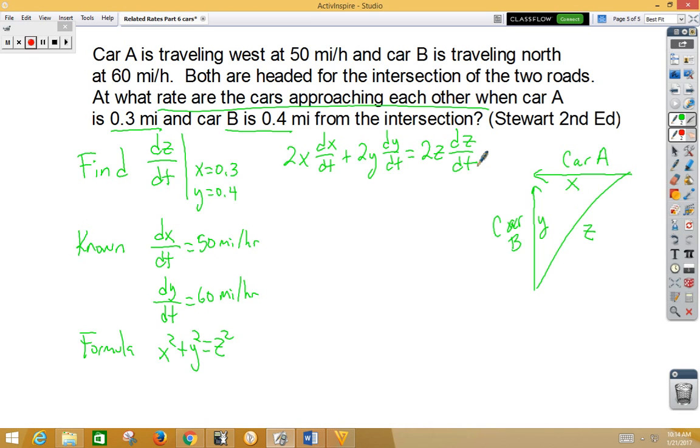We notice immediately we can factor out and divide off a 2 everywhere, so let's cross those out. Now it's time to plug in. If we come over to our triangle, we know car A is 0.3, car B is 0.4, and using a Pythagorean triple, our hypotenuse would be 0.5.